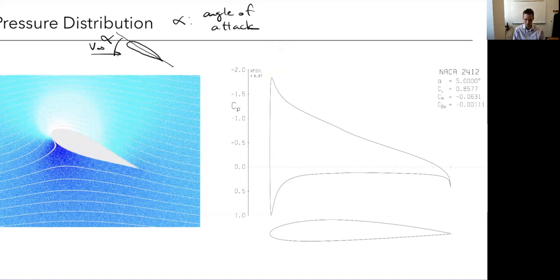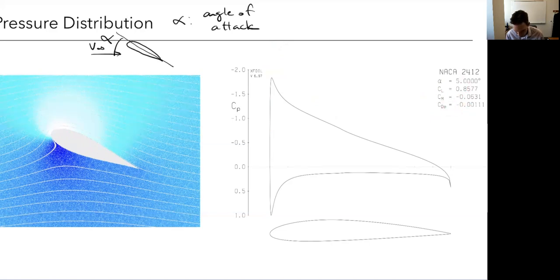There are trade-offs here. The statistics shown include alpha at five degrees angle of attack, the lift coefficient, moment coefficient, and parasitic drag coefficient — we'll talk about the different pieces of drag in the future. That's it for today; next time we will get into the second half of our discussion on airfoils and wings.